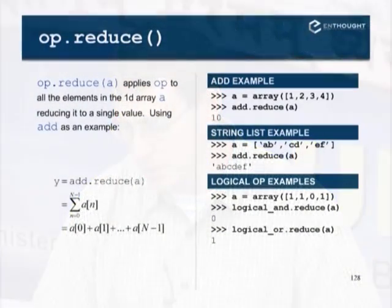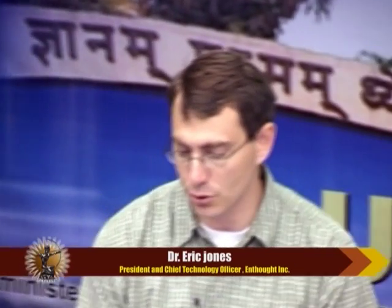So add.reduce of A adds those together. But look what happens if you have a list — it works on lists as well. These universal functions work on any sequence and will try to do a reduction of those elements by performing the add operation. So here we have strings: A is a list of strings, and if we do the reduce, since adding strings is concatenation, we're taking A, B, C, D, E, F and squeezing them into a single string.